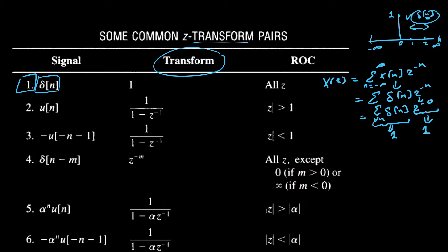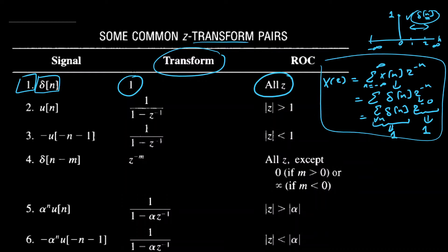X of Z is one, independent of Z, so it holds for all values of Z. This is essentially the sifting property of delta(n): if you multiply delta(n) by any function h(n), the outcome is delta(n) times h(0), meaning it only exists at time zero.